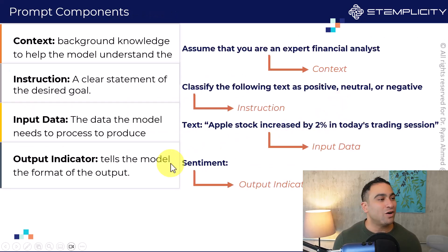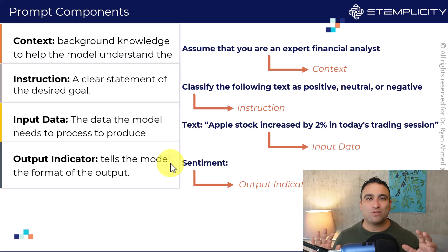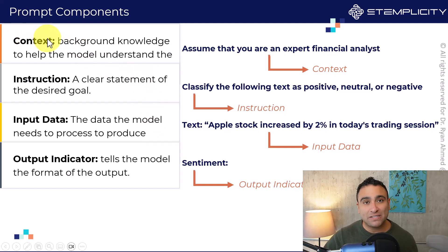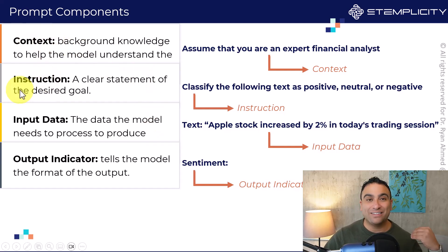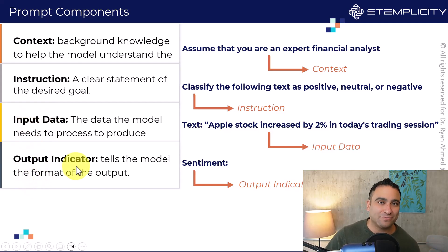What are the key prompt components? This is the best way to structure a prompt. First, we add context. Second, we add instructions. Then we add input data. And then we add what we call an output indicator. Let me show you what I mean.